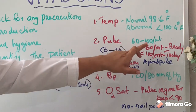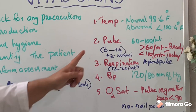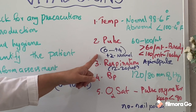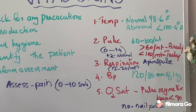A pulse of +2 is considered normal; 0 is absence of pulse; +3 and +4 are considered bounding pulse, which is abnormal. You also count the apical pulse — the landmark is the fifth intercostal space at the mid-clavicular line, the point of maximum impulse. Count the pulse there with your stethoscope for one complete minute.